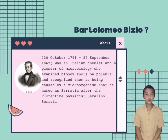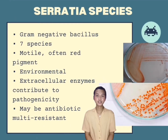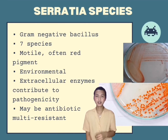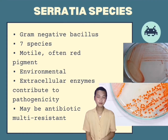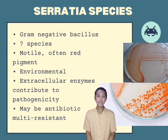Serratia species — gram-negative bacillus. Gram-negative organisms can be found in cocci or rods. Most gram-negative bacteria are rods, so since this bacteria also belongs to rod shape, it is a gram-negative bacillus. There are seven species, motile, often with red pigment, and environmental.